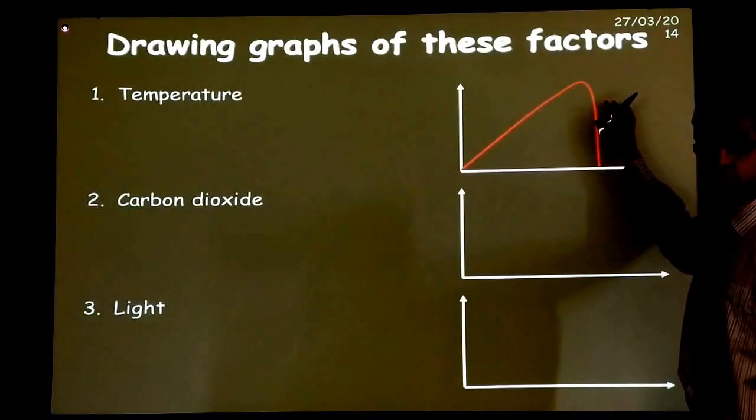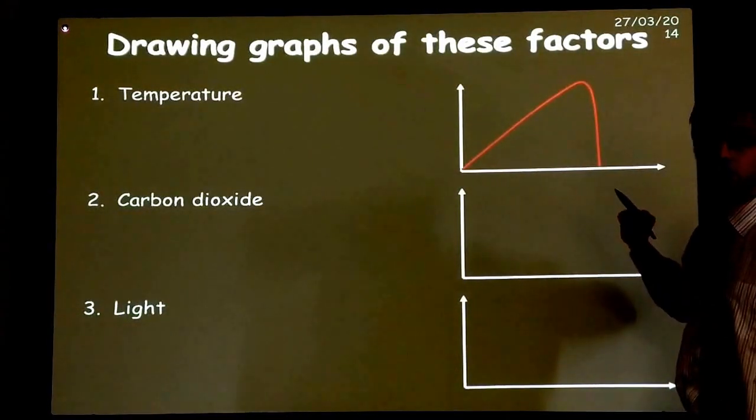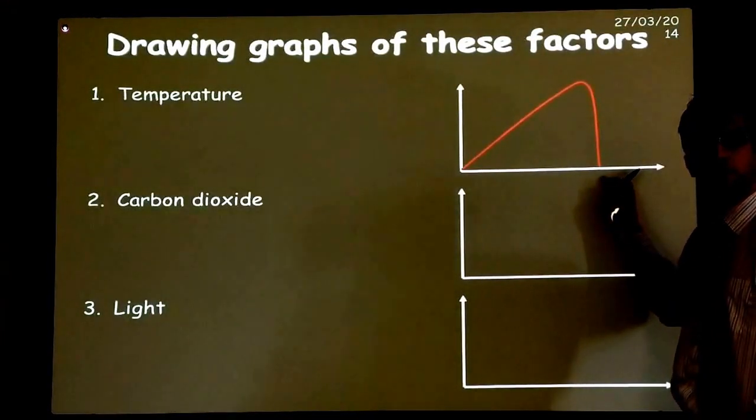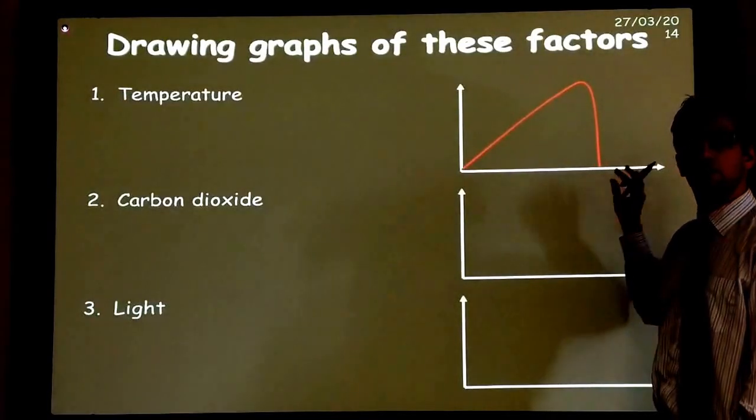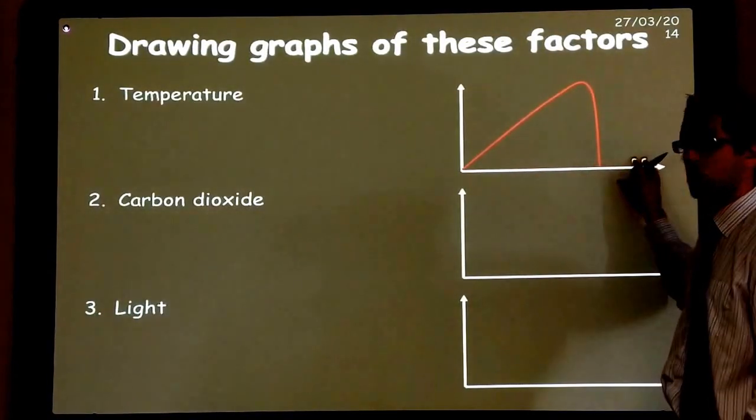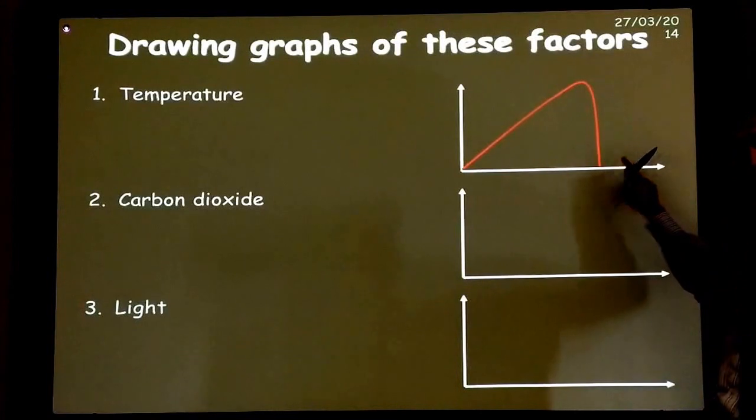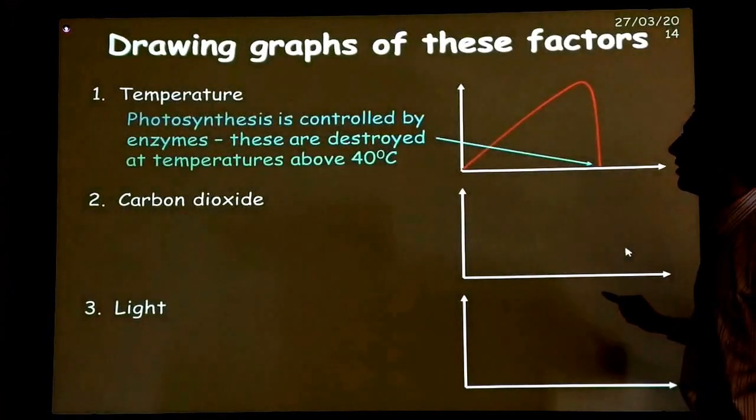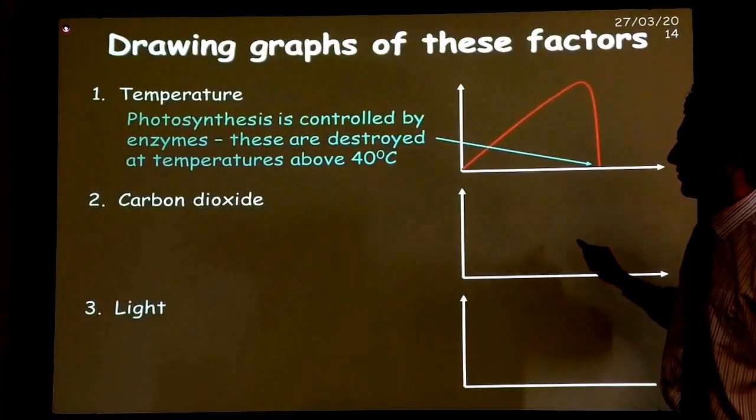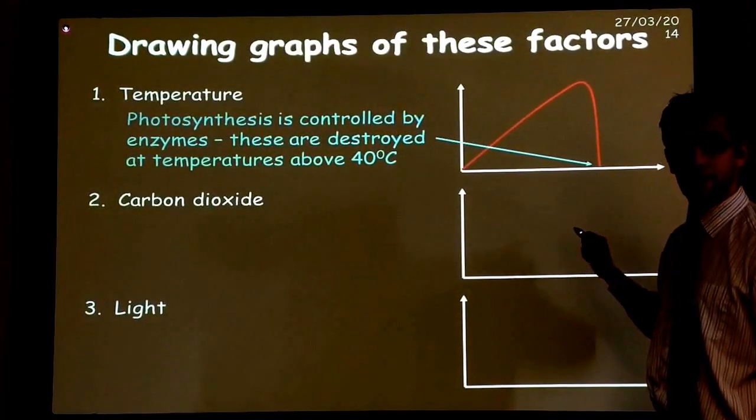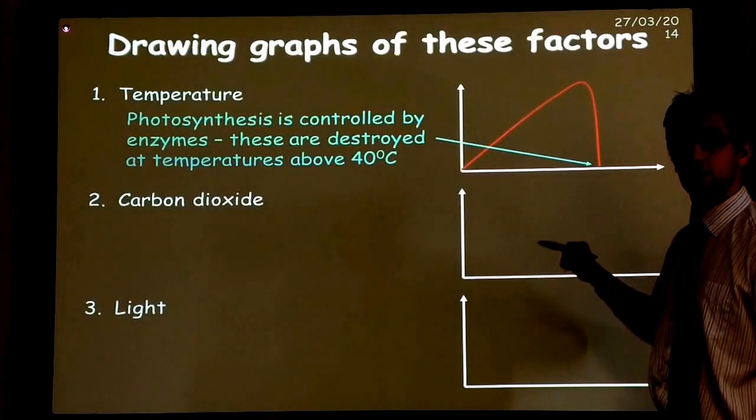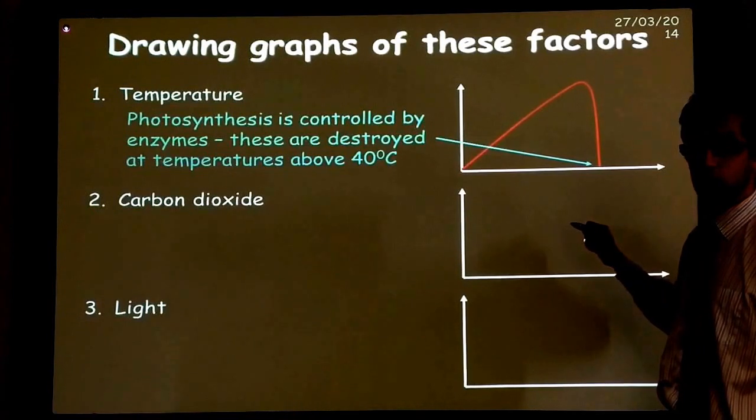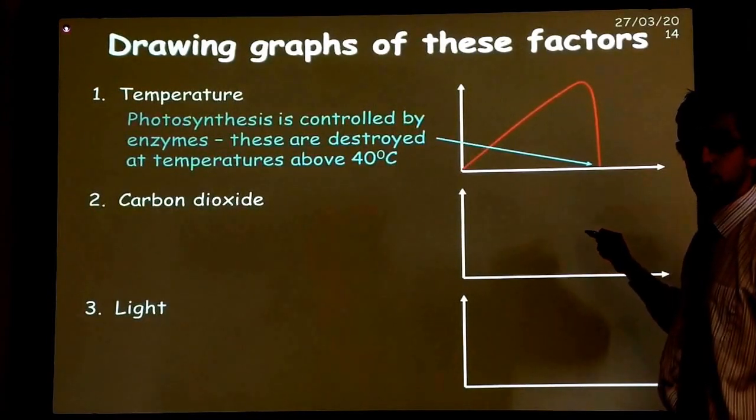Above that temperature, as we have already mentioned, the enzymes denature, the reactions stop and therefore the rate of photosynthesis will plummet back to zero. And that is because in this case, with temperature, it got too high and therefore the rate of reaction has actually stopped. And that is what is explained here. So above 40 degrees C, enzymes denatured, active site has changed shape, so it does not fit, the substrate does not fit anymore. You should refer back to your enzymes video to check on that.